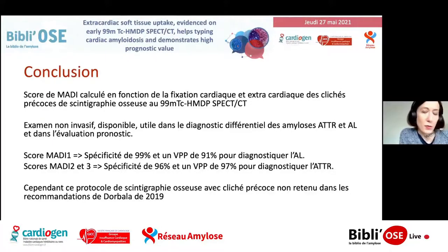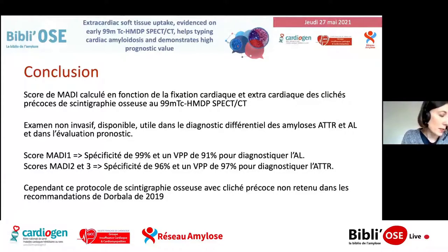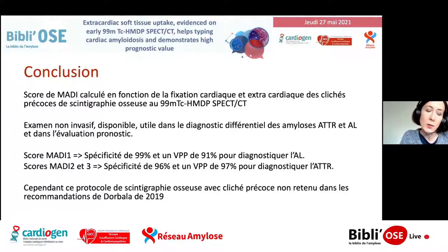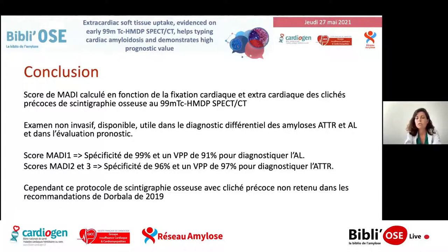Merci beaucoup pour cette belle présentation. J'ai deux questions. La première concerne le papier : il était proposé une modification de l'algorithme diagnostique — est-ce que cela consiste dans le remplacement de la scintigraphie osseuse classique par ce type de protocole ? Oui, ce serait une proposition de nouvel algorithme, mais la limite est que tous les centres ne font pas encore de clichés précoces. De plus, on n'a pas suffisamment de preuves pour éliminer la preuve histologique dans le diagnostic d'amylose AL, donc on doit rester à la preuve histologique en cas d'amylose AL.